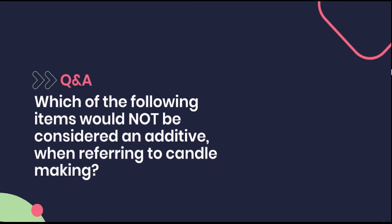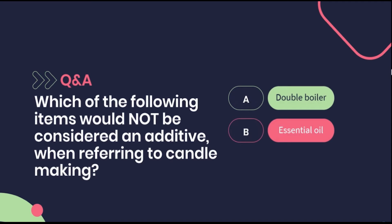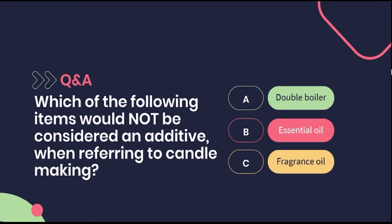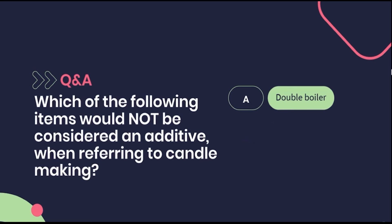Now for a multiple choice question. Which of the following items would not be considered an additive when referring to candle making? Would it be A, a double boiler; B, essential oil; or C, fragrance oil? The correct answer is A, a double boiler. This is a piece of candle making equipment and not an additive.